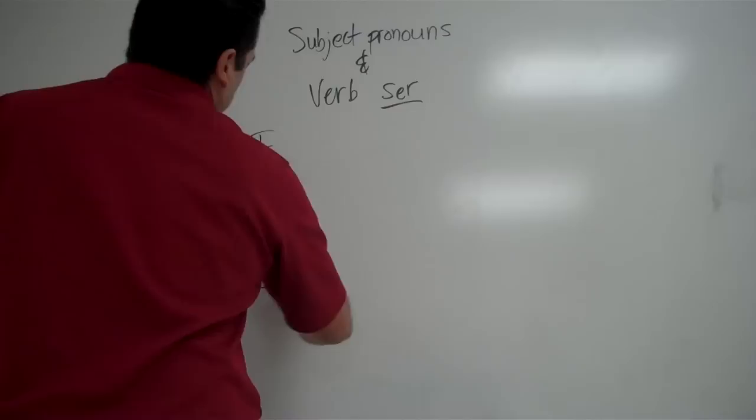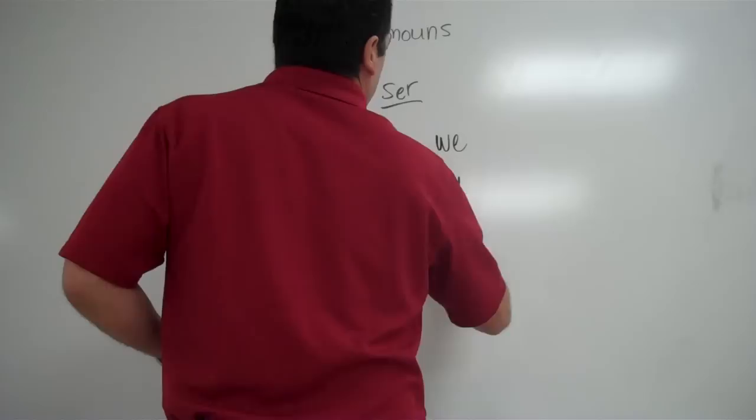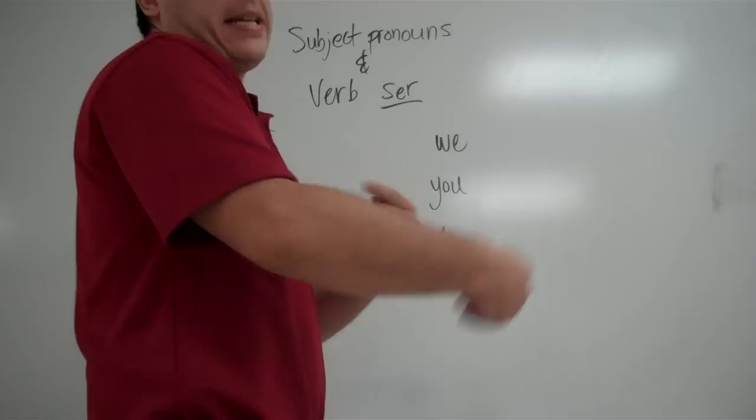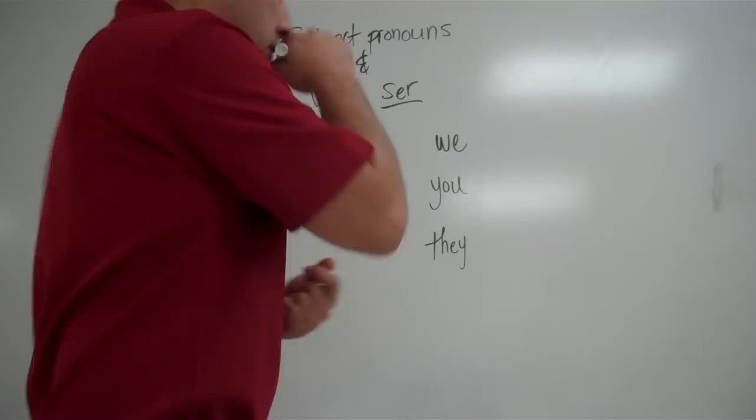The plural forms of those would be we, you again in English. And then we have the form they. Okay, so we have seven in English, six really because the you is done twice here. And in Spanish we're going to change that up. We're going to have a few more forms because Spanish makes a difference between a formal you, a respectful you, and a regular friendly you.